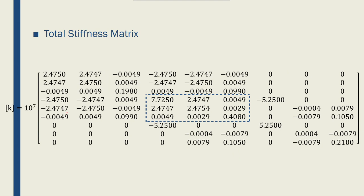This is the total stiffness matrix we found for the structure. It's a 9x9 matrix. This region, shown by this rectangle, is due to node 2, which is connected to both elements. Those components of the matrix are added from the global stiffness matrices for element 1 and element 2, corresponding to the degrees of freedom common between the two stiffness matrices.